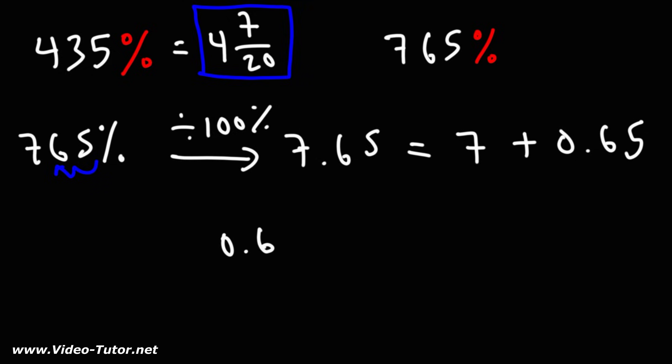Now, 0.65, let's convert that to a fraction. Since it ends in the hundreds place, we're going to multiply the top and bottom by 100. This will give us 65 over 100.